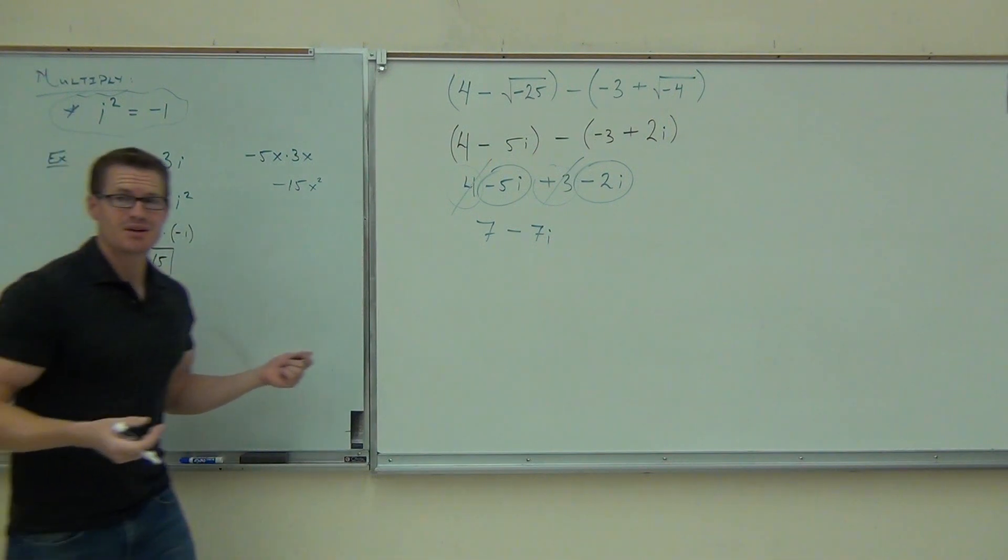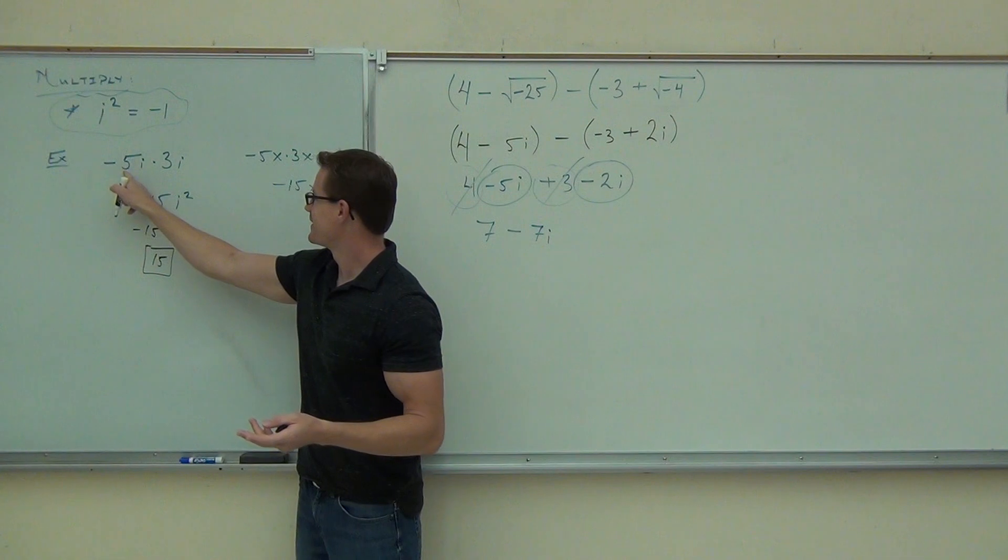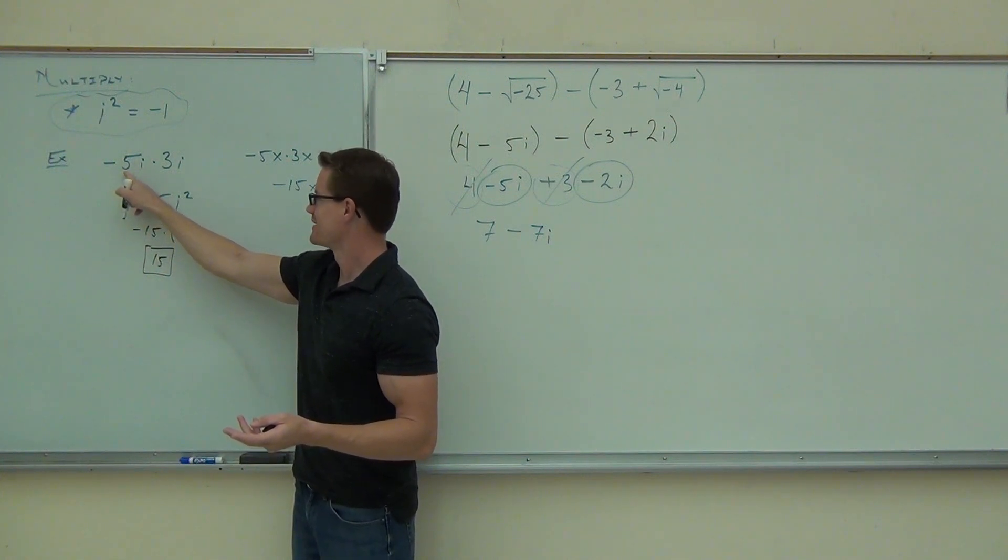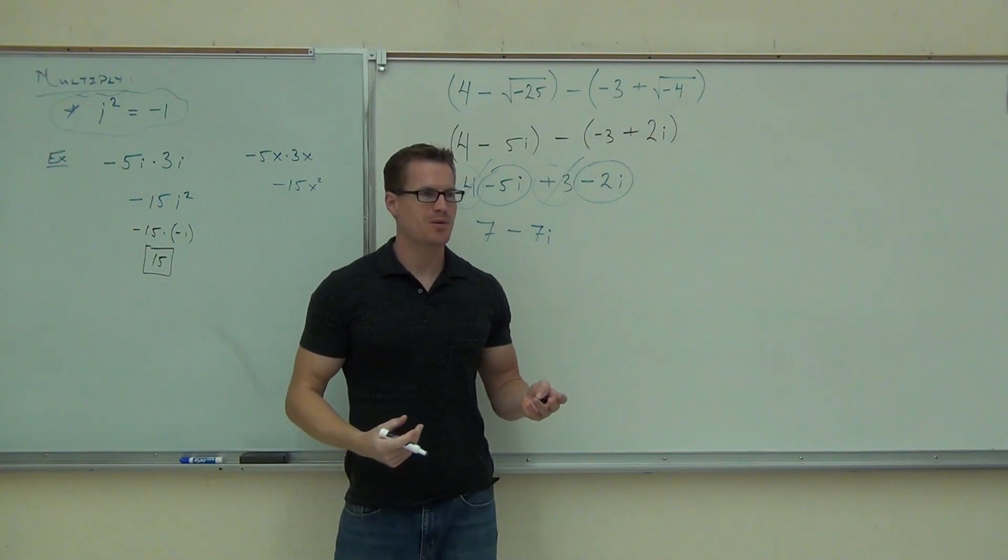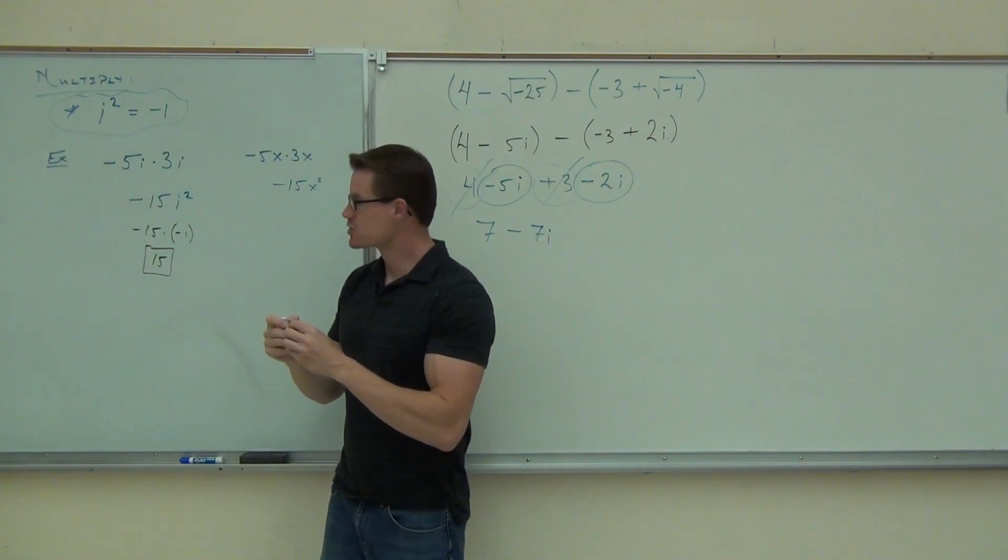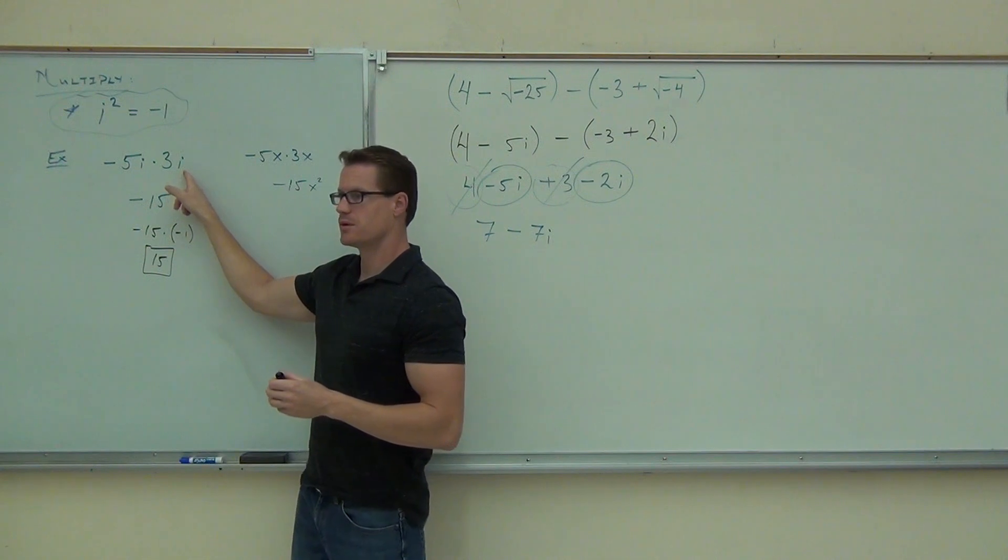So interestingly, we don't even get an i out of that. Look at that. We've got a negative 5i times a 3i. We get positive 15. It's weird, right? Things happen with roots. These are roots here. And what's happening is you're multiplying a root times itself. Notice that?